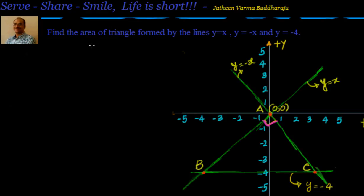In this session let's look at how to find the area of the triangle formed by 3 lines. So we have been given equations of 3 lines. We have to find out the area of the triangle which is formed by the intersection of these 3 lines.